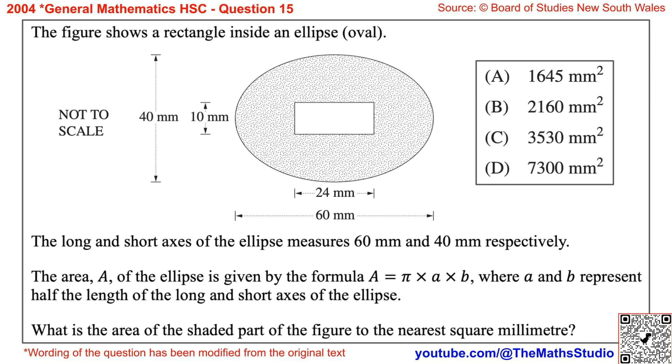The long and short axes of the ellipse measure 60mm and 40mm respectively. The area, capital A, of the ellipse is given by the formula capital A equals π times a times b, where a and b represent half the length of the long and short axes of the ellipse.